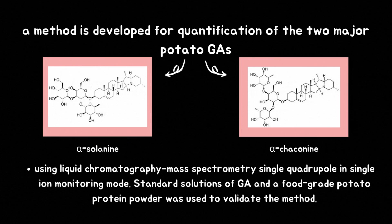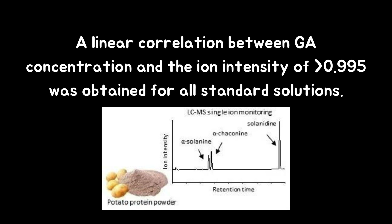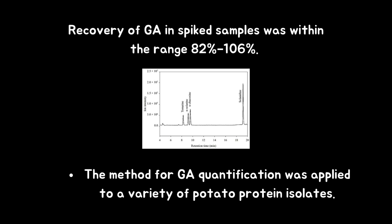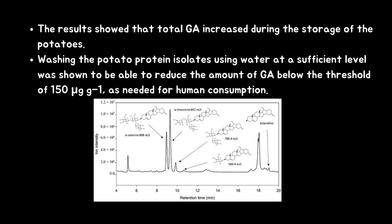Standard solutions of glycoalkaloids and a food-grade potato protein powder were used to validate the method. A linear correlation between glycoalkaloid concentration and ion intensity of more than 0.995 was obtained for all standard solutions. Recovery of glycoalkaloids in spiked samples was within the range of 82% to 106%. The method for glycoalkaloid quantification was applied to a variety of potato protein isolates. The results showed that total glycoalkaloids increased during storage of the potatoes. Washing the potato protein isolates using water at a sufficient level was shown to reduce the amount of glycoalkaloids below the threshold of 150 micrograms per gram, as needed for human consumption.